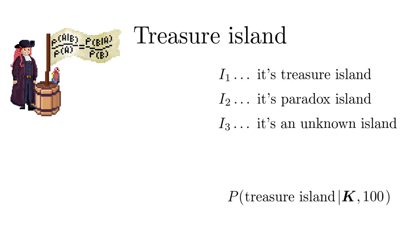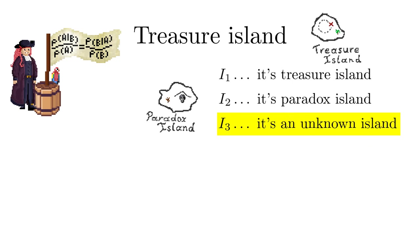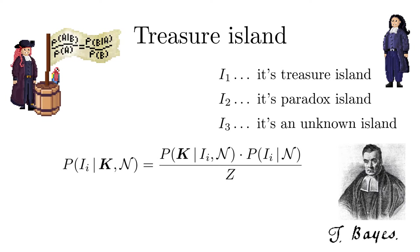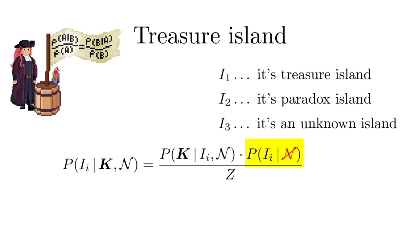We introduce the propositions concerning the island I sub I where I equal to 1 stands for treasure island, E equal to 2 for paradox island and E equal to 3 as conjectured by Pascal for the unknown island. The desired probability is given by Thomas Bayes' theorem. Here the second factor in the numerator is the prior probability, the one without the result of the fishing. Let's assume that the prior probability for the unknown island is alpha and very small, while the probability for treasure and paradox island are the same.